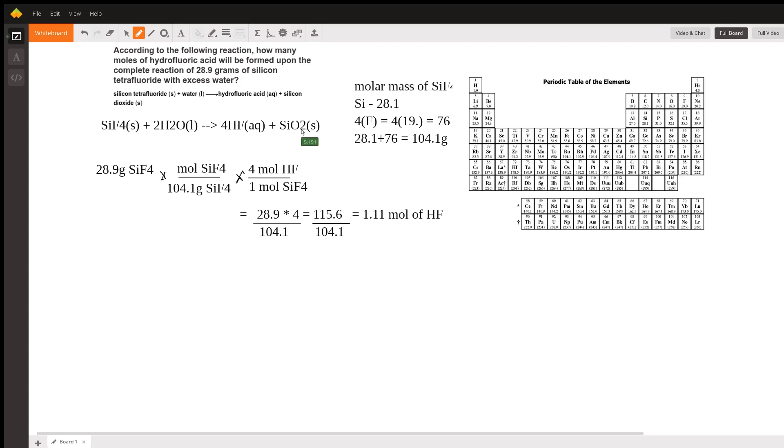Every time you write down a reaction, you always want to balance it. I've balanced it out so that now I have four hydrogens on both sides, four fluorines on both sides, two oxygens on both sides, and a silicon on both sides. The reaction is completely balanced now.